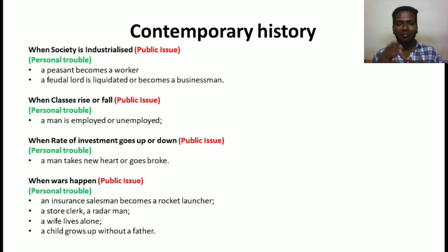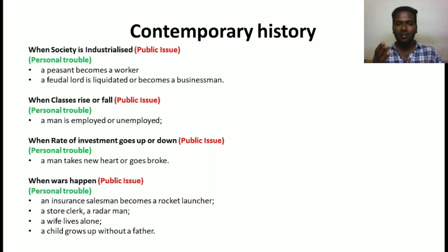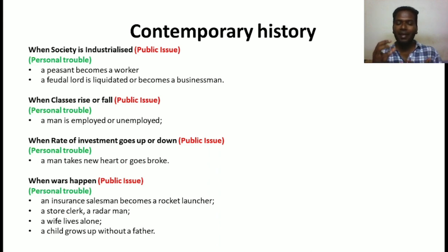Another example: when classes rise or fall, a person is sometimes employed and sometimes unemployed. Being employed or unemployed is a personal trouble, while rising or falling class status is a public issue. Similarly, when the rate of investment goes up or down, it becomes a public issue because each individual is affected by those investment changes.